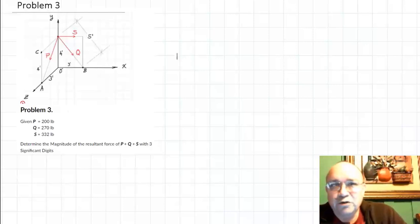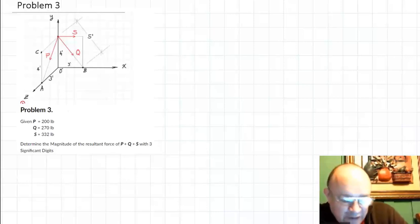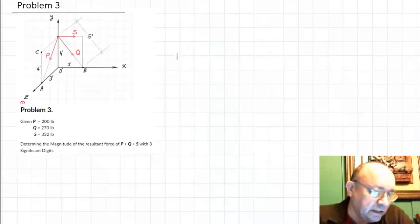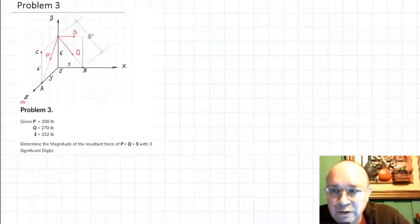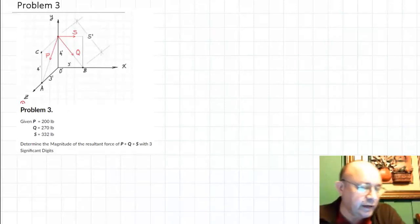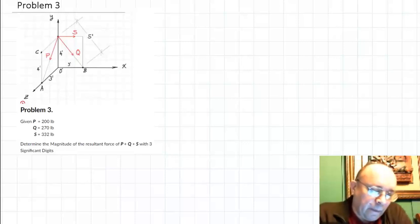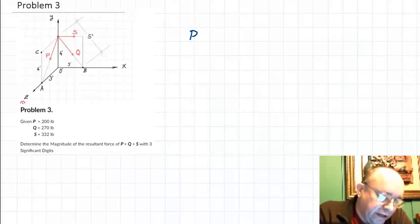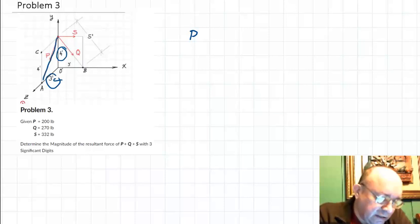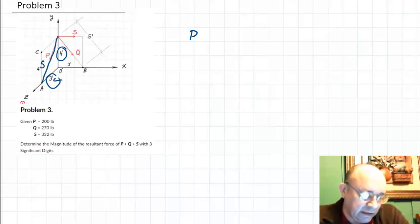Problem three: you have to find the summation of three forces — very similar to problem one, but this is 3D. Same approach: find the components of each force, then add by direction. For force P, we don't have angles but we have dimensions — three, four, and four — making a 3-4-5 right triangle. So this distance is five.